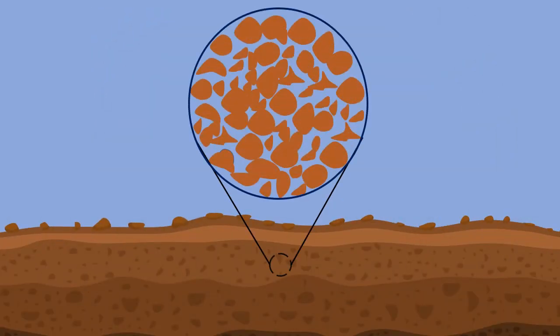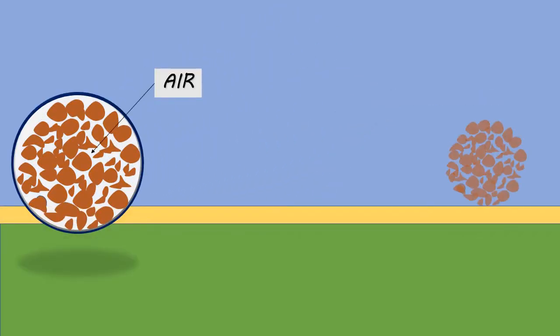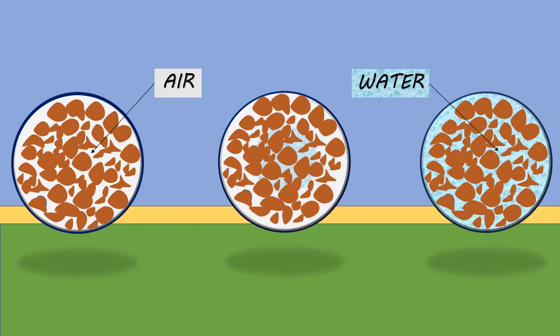Hence, soil consists of two parts: solid particles and voids. The voids in the soil mass may be filled with air, or with water, or partially with air and water.